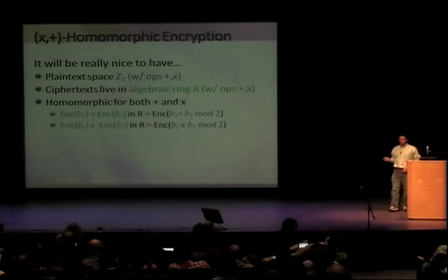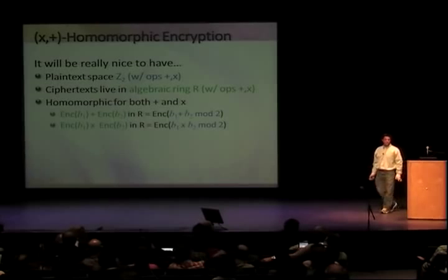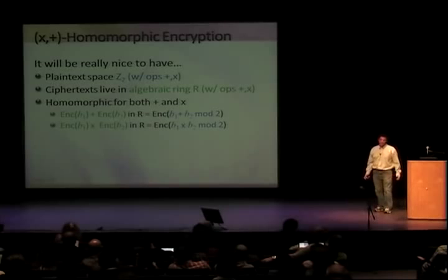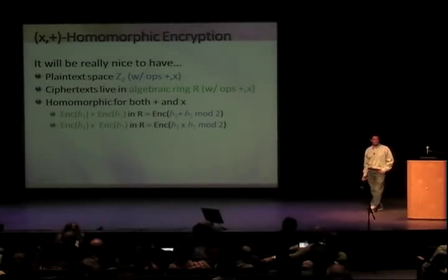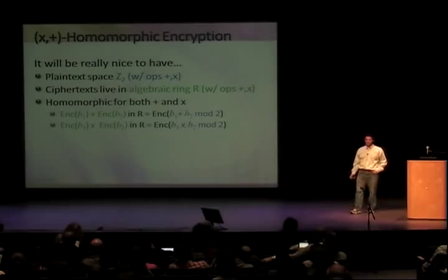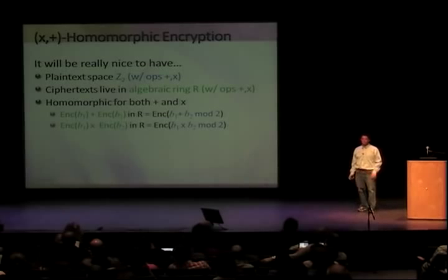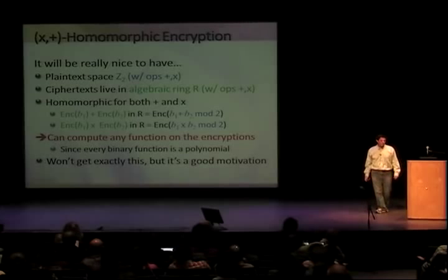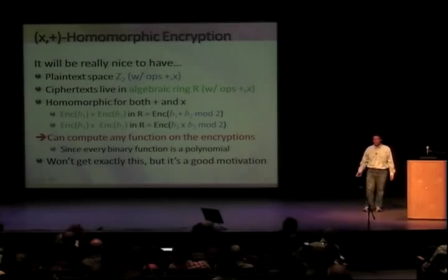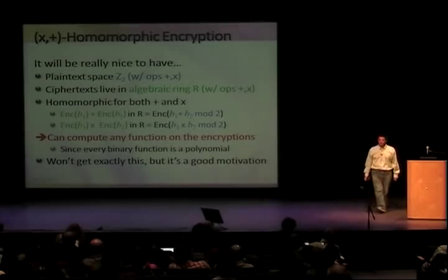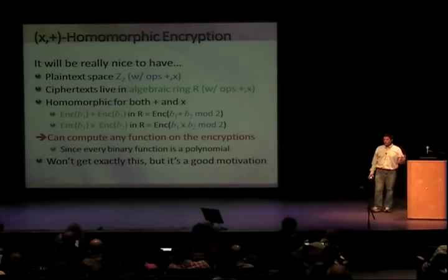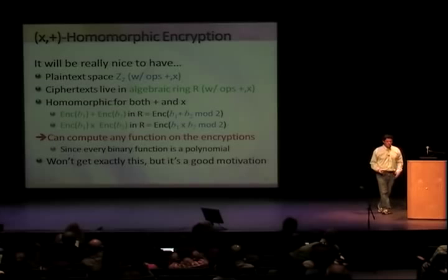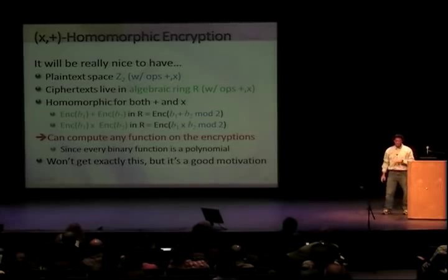What we really want is something like this: the plaintext space is Z_2 — so bits — and the ciphertexts live in some algebraic ring R that has its own addition and multiplication operations. We'd like the property that if we take two ciphertexts and add them in this ring, we get an encryption of the sum of the two plaintext bits, and similarly for multiplication. If we could get something like that, then we can evaluate any function, because any function can be written as a Boolean circuit, any Boolean circuit can be written as a polynomial, and once you can add and multiply, you can compute polynomials.